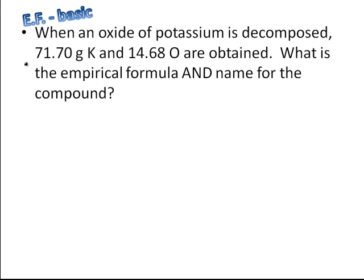Alright, next problem. These are empirical formula problems. So it says when an oxide of potassium is decomposed, 71.70 grams of potassium and 14.68 grams of oxygen are obtained. What is the empirical formula and the name for this compound? So what we're going to do is we're going to take our masses and convert them to moles. Once we get moles, we'll look at the mole ratio.